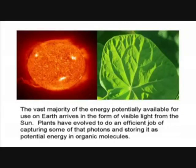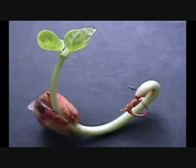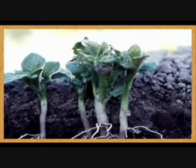The vast majority of the energy potentially available for use on Earth arrives in the form of visible light from the sun. Plants have evolved to do an efficient job of capturing some of those photons and storing it as potential energy in organic molecules.